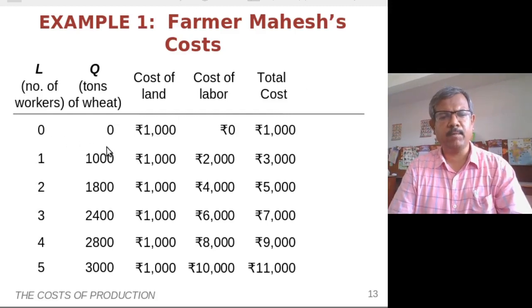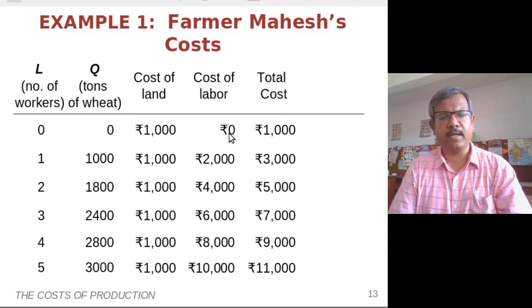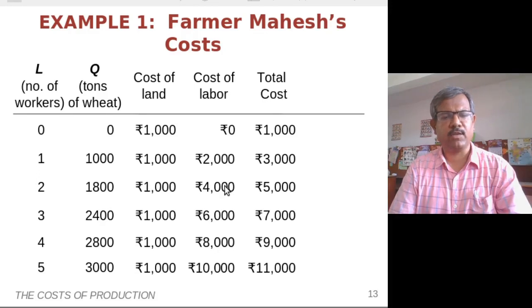If you pay attention to the table, the cost of land is Rs. 1000 irrespective of how many workers he hires or how many tons of wheat he grows — it stays the same all the time. The cost of labor varies depending on how many workers he hires. The assumption was Rs. 2000 per month for every worker, which means for every additional worker it increases by Rs. 2000: Rs. 2000, Rs. 4000, Rs. 6000, Rs. 8000, and at 5 workers it reaches Rs. 10,000 as monthly wages.